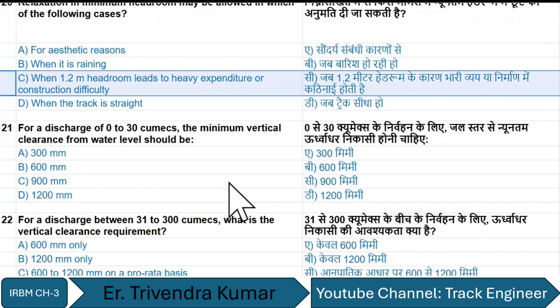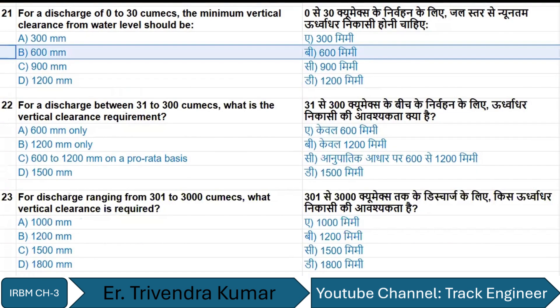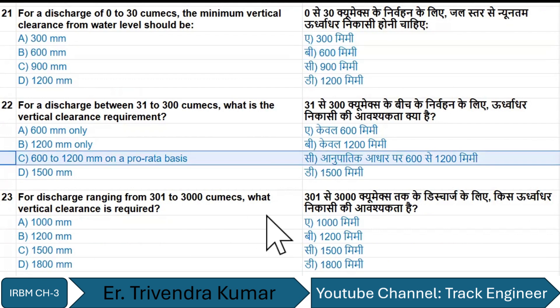For a discharge of 0 to 30 cumecs, the minimum vertical clearance from the water level should be 600 millimeters. For a design discharge between 31 to 300 cumecs, the vertical clearance requirement is 600 to 1200 millimeters on a pro-rata basis — option C.